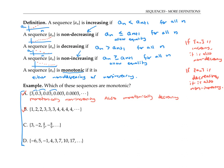The second sequence is monotonically non-decreasing, since we never go down as we go from one term to the next — we either go up or stay at the same level. However, we could not say that the sequence is monotonically increasing because of the equality between some pairs of consecutive terms.